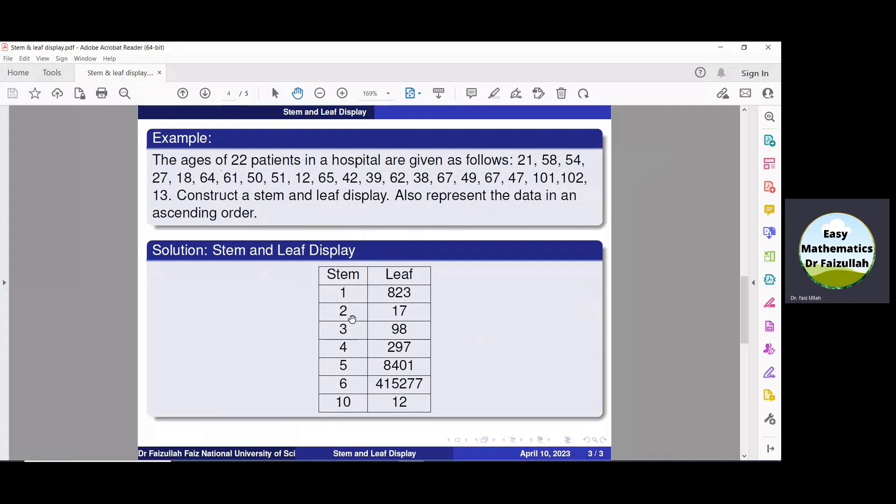And now let us find all those numbers in this data whose first part is 2. So the first one is 21, 1 will go to the leaf. The next one is 27, 7 will go to the leaf.